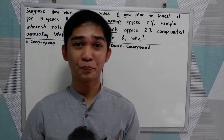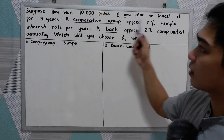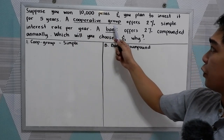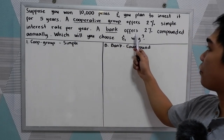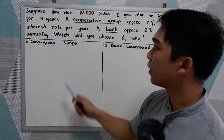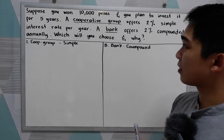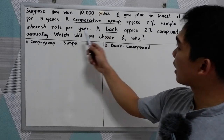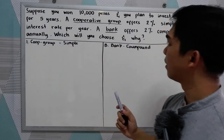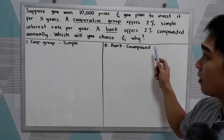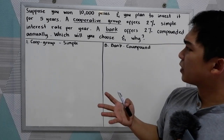So let's have this problem. Suppose you won 10,000 pesos and you plan to invest it for five years. A cooperative group offers 2% simple interest per year, while a bank offers 2% compounded annually. Which will you choose and why? We have two options: the cooperative group with simple interest of 2% per year, and the bank with 2% interest compounded annually.